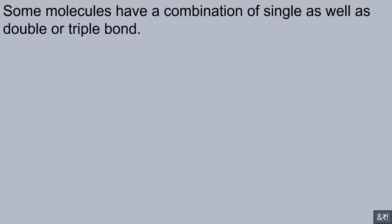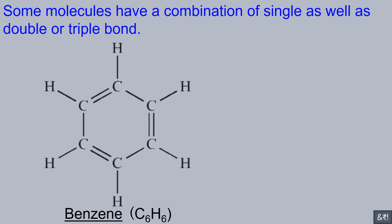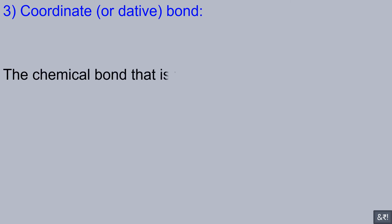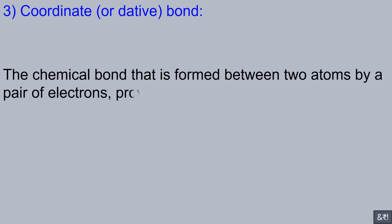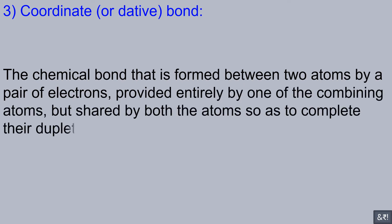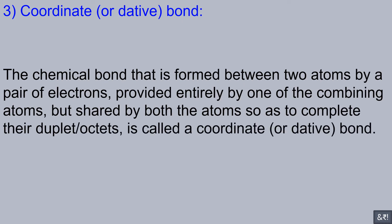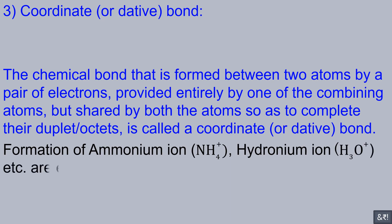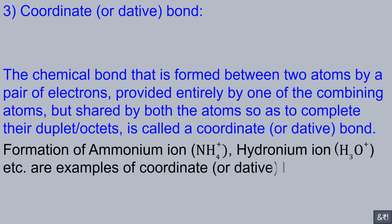Some molecules have a combination of single as well as double or triple bonds. The chemical bond that is formed between two atoms by a pair of electrons provided entirely by one of the combining atoms, but shared by both atoms so as to complete their duplet or octets, is called the coordinate bond. Formation of ammonium ion, hydronium ion, etc. are examples of coordinate bond.